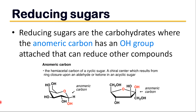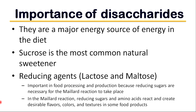Lactose and maltose have a free aldehyde group and thus are reducing sugars. When we consider the importance of disaccharides, they are a major source of energy in the diet. Sucrose is the most common natural sweetener, and lactose and maltose are reducing sugars.